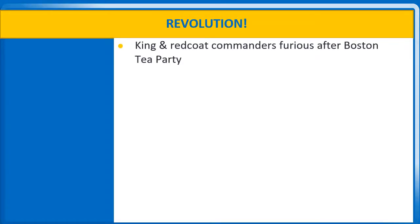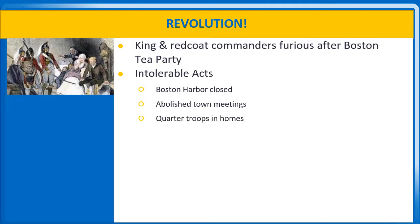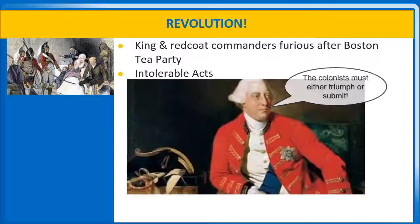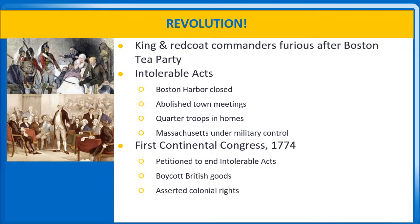After the Boston Tea Party, leaders were furious. To the king and the redcoat commanders, past insubordination paled next to this direct economic hit on a struggling British company. So the English introduced what colonists dubbed the Intolerable Acts. These laws closed Boston Harbor until the tea was paid for, abolished town meetings, authorized the quartering of troops in any home in Massachusetts, and essentially put the state under military control. King George III put it bluntly: the colonists must either triumph or submit. But Americans refused to submit. Instead, 12 colonies sent representatives to the First Continental Congress in September 1774. This Congress petitioned for an end to the Intolerable Acts, called for a boycott on British goods, and asserted colonial rights to life, liberty, and property. They agreed to meet again in May 1775.